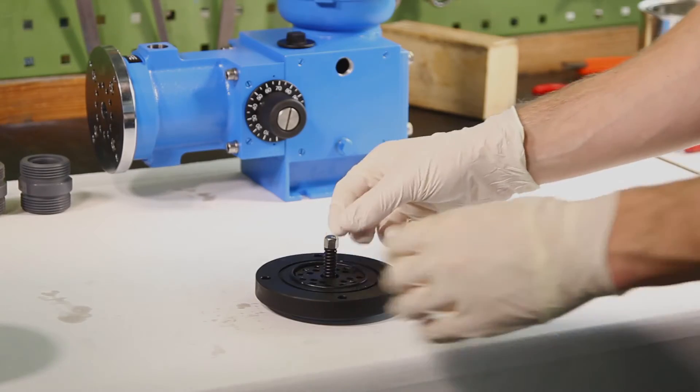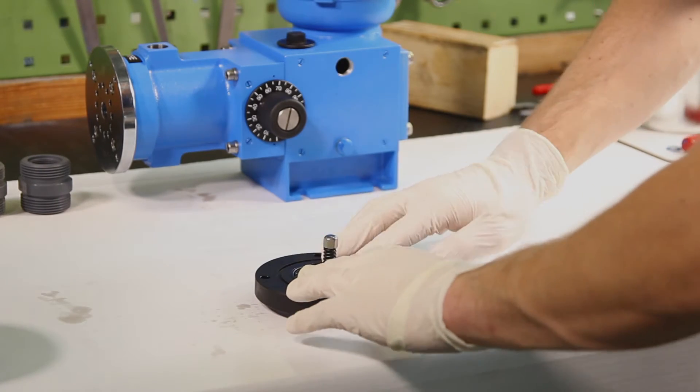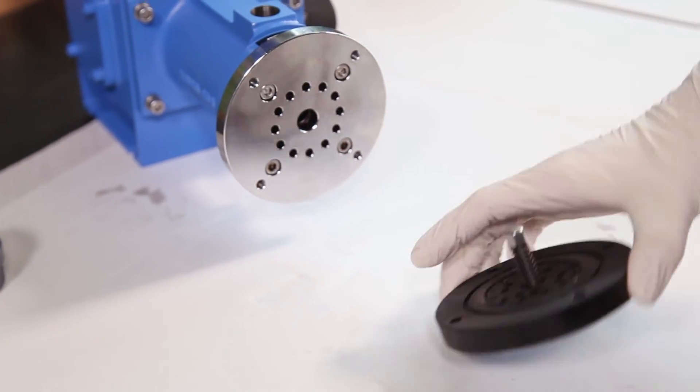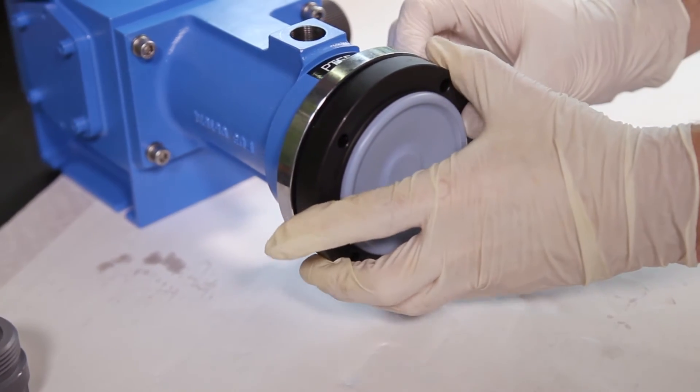The sealing between the dosing head, diaphragm and diaphragm support plate is done by the outer bead of the diaphragm. Accordingly, the sealing surface of the dosing head should be cleaned and checked for damage very thoroughly.